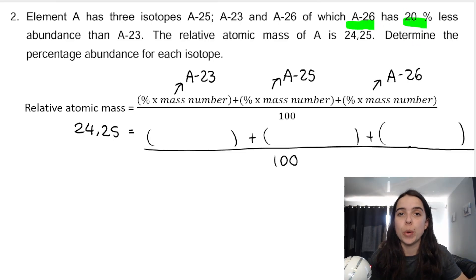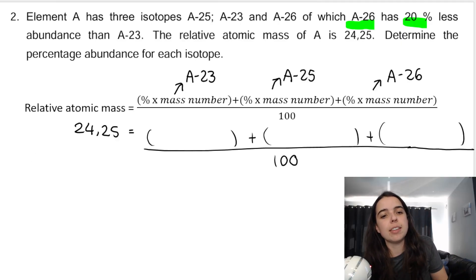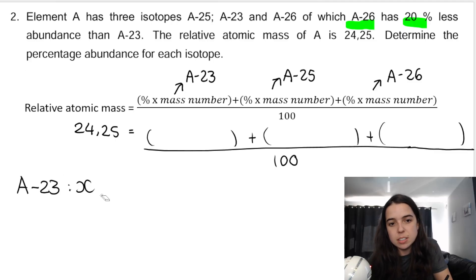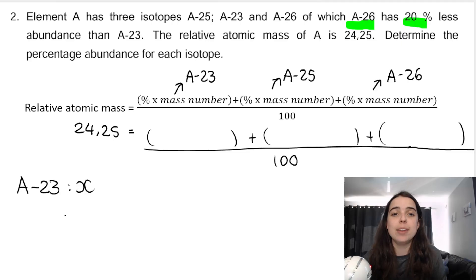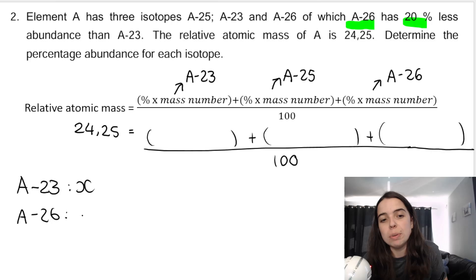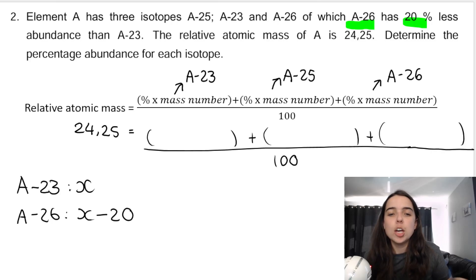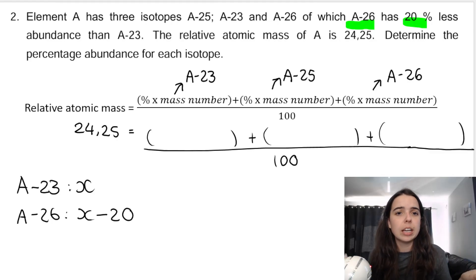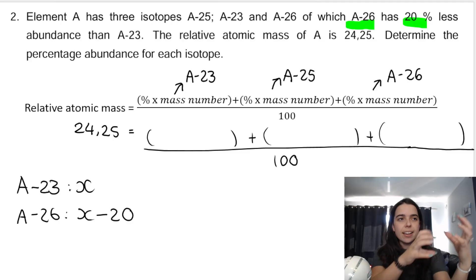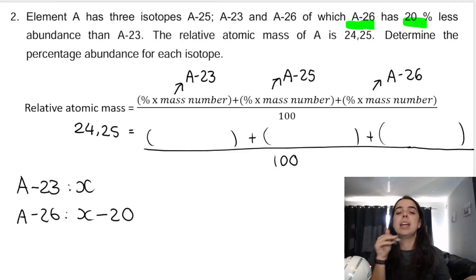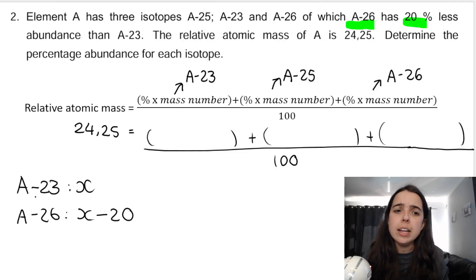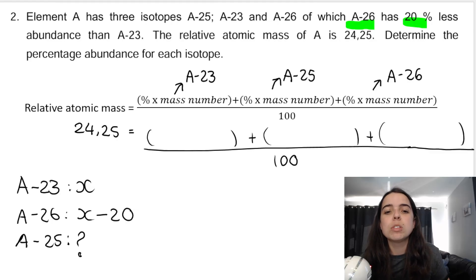Since A26 has 20% less abundance than A23, it makes sense to let A23 = x. Then A26 = x − 20, because if A23 is, say, 70%, then A26 would be 20 less — so 50%, which is x − 20. If it had said 20 more, it would be x + 20.